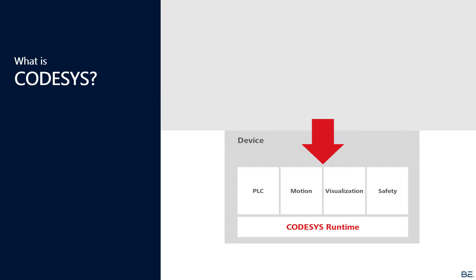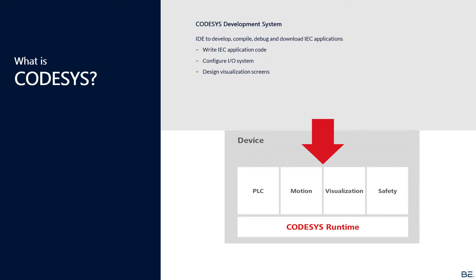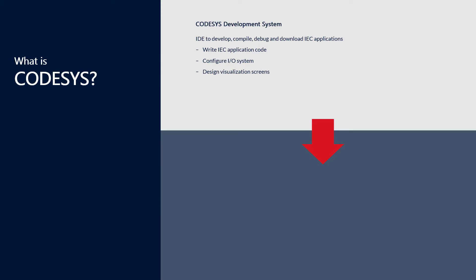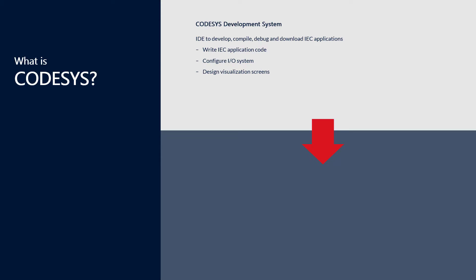The CODESYS programming system runs on a PC, and the user can develop, compile, debug, and download IEC applications into a PLC. Additionally, the user configures the I/O system and designs visualization screens in the CODESYS IDE if needed.